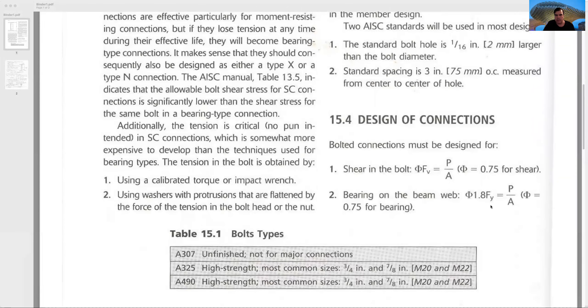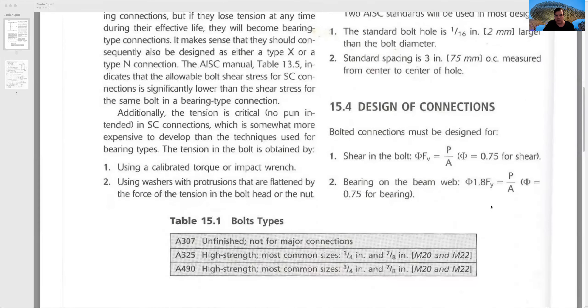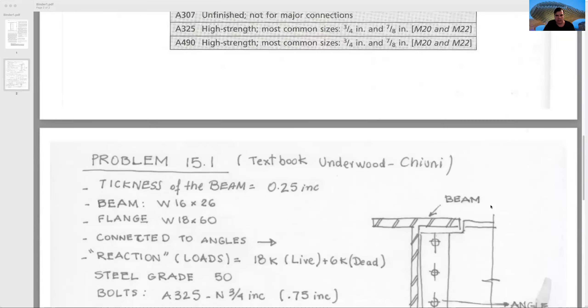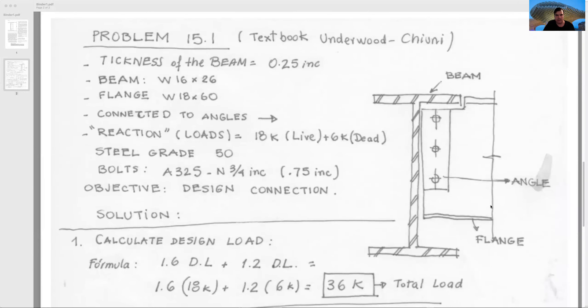If we look, we have a beam and we connect with an angle, and the bearing of the web will be the area of the bolt that is in contact. Let's start with problem number 15.1. This is exactly the same problem from the book, and this is the type of problem that we need to resolve. First we have a beam that is connected with a flange. This is a standard drawing.